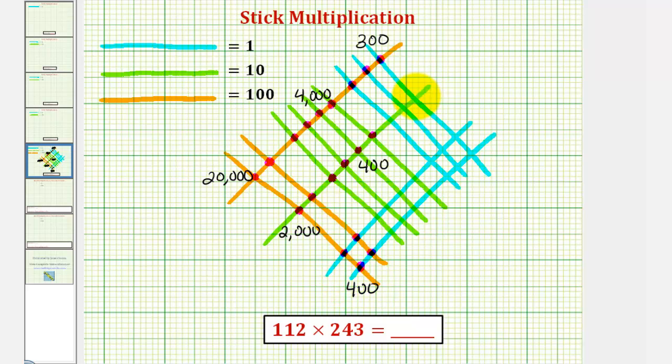Here we have intersection points of a green and a blue, which represent 10 times 1, or 10. So we have 10, 20, 30 here. And here we have 10, 20, 30, 40, 50, 60, 70, and 80.